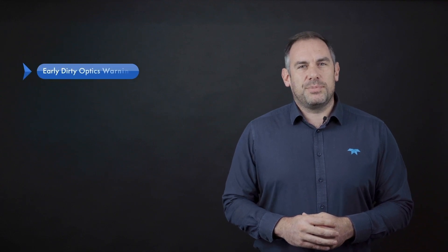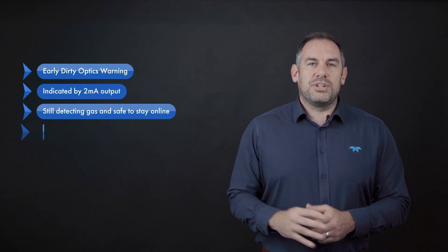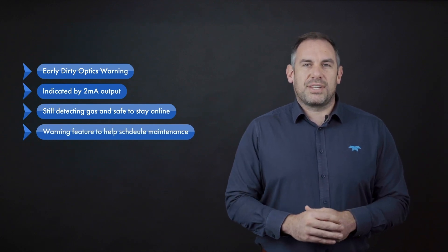To summarize, when the device goes into the early dirty optics warning state and outputs 2 milliamps, the device is still detecting. What it means is you should schedule in either a device swap out or a lens clean into your maintenance schedule.